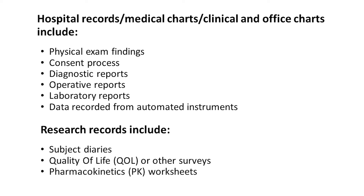Some source data, such as quality of life surveys and other patient-recorded outcomes, or PK worksheets, may not be found in the medical record, but rather in the research record. However, at a minimum, there should be some notation in the medical record that surveys were collected or when PKs were drawn.